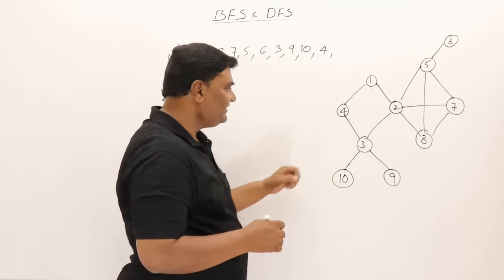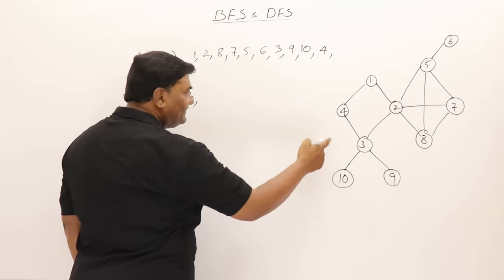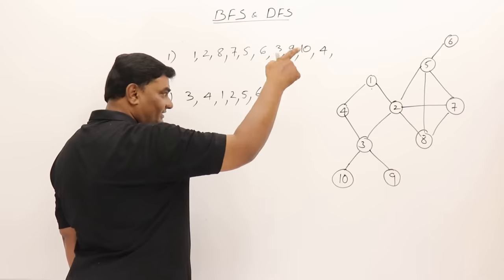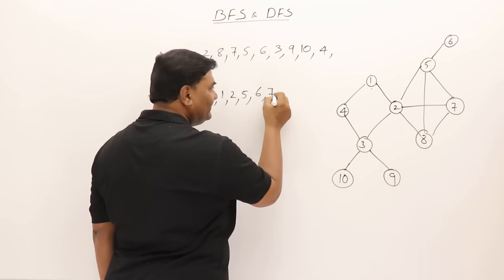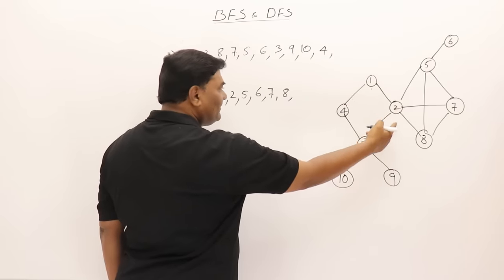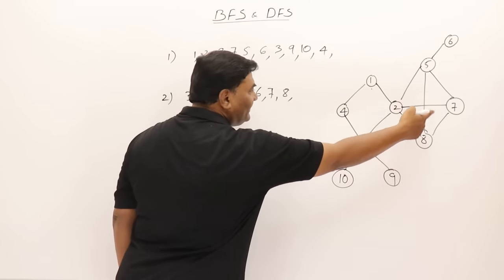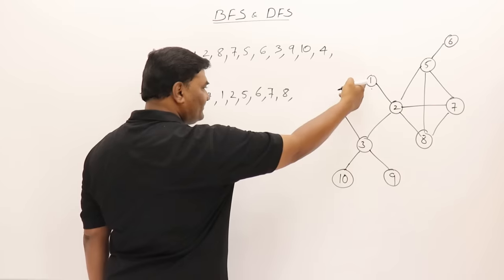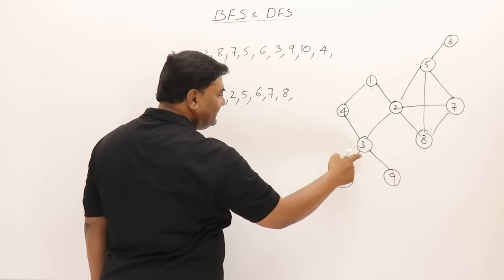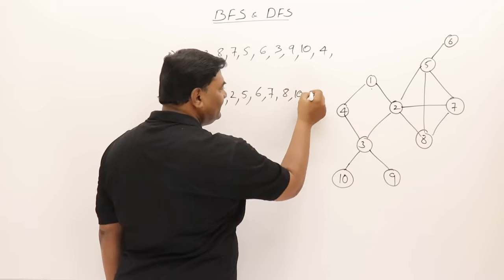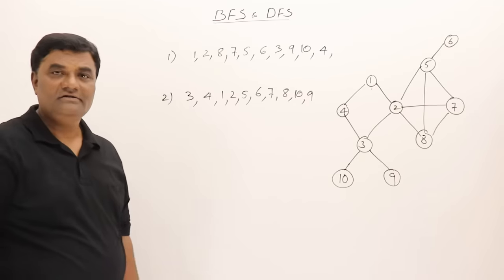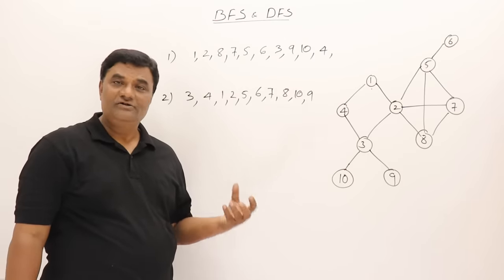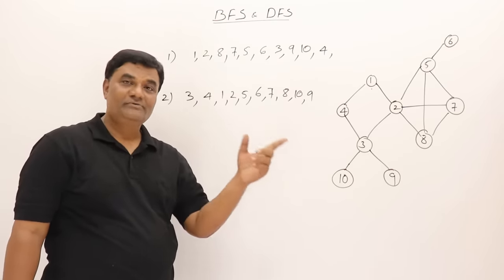One more: start from vertex 3 — visit 3, then 4, then 1, then 2, then 5, then 6. From 6 cannot go anywhere, back to 5, go to 7, then 8. From 8 back to 2 — already visited. Back to 7, 5, 2. From 2, 1 is already completed. Back to 4, back to 3. From 3 the remaining are 10 and 9 — visit 10, then 9. This is also valid. The key rule: once you visit a new vertex, suspend the current exploration and start exploring the new vertex.